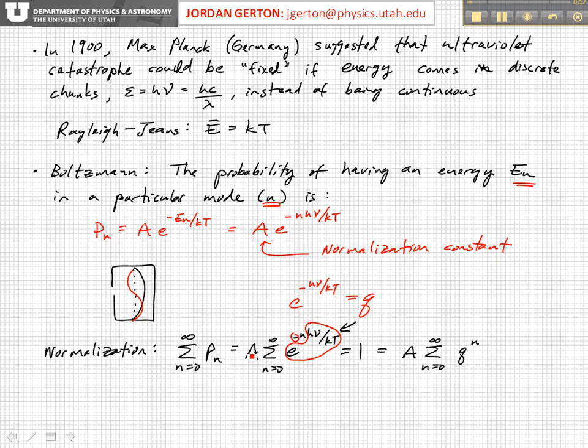The sum of all the probabilities has to be equal to 1. If we rewrite this, if we basically set Q equal to e to the minus h nu over kT, which again is a constant for a particular frequency and a particular temperature, then we can rewrite the normalization condition like that.